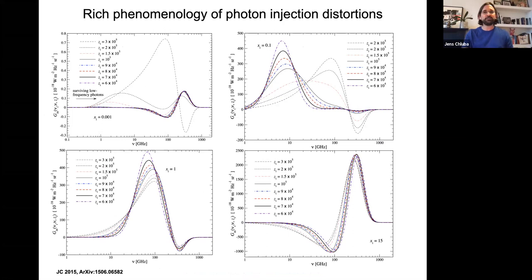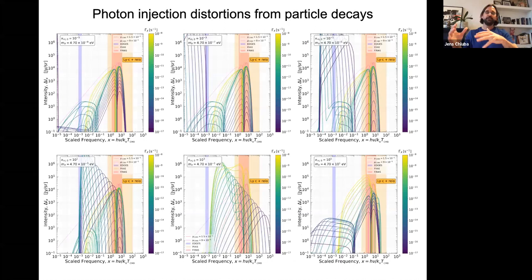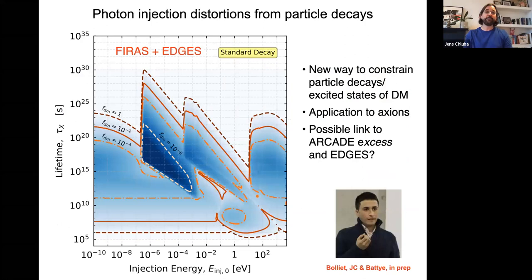Briefly on photon injection from decaying particles: injecting photons can give a wide range of spectra and signals. I'm doing this work with Boris Bolliet, now at Columbia University, using it to constrain the lifetime and energy of particles injecting energy — talking about very small masses or excited states of dark matter — using FIRAS and EDGES data. That paper should come out soon.